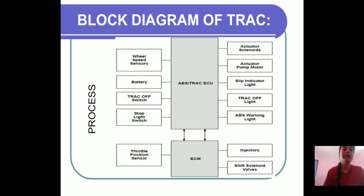Here is a block diagram of traction control system. The inputs are shown in the left-hand side, in the middle the process control is represented, and in the right side the controlled outputs for the TRAC system are shown.